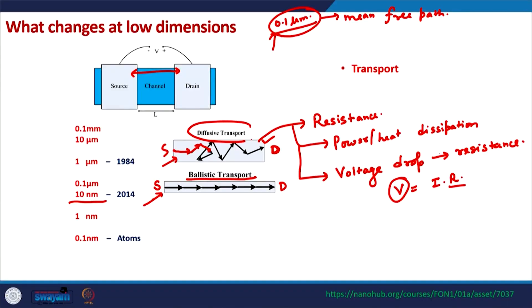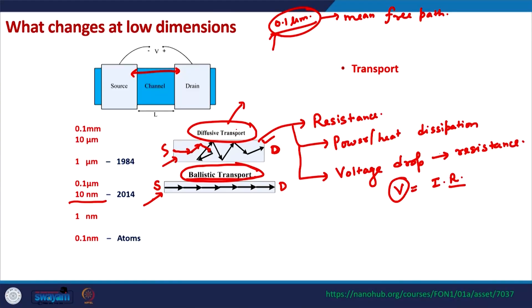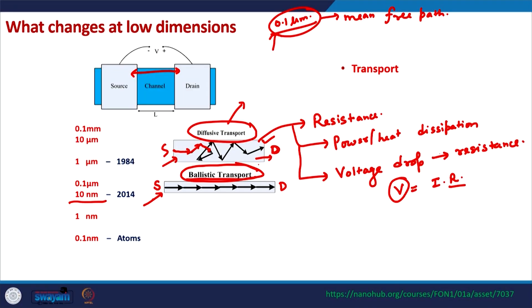Transport where the electron undergoes many collisions in the channel, as in bulk devices, is known as diffusive transport. But in many modern-day devices the transport is no longer diffusive. It is either ballistic transport if the transistor is very small, or on the boundary of ballistic and diffusive, where the electron might undergo some collisions but things are not averaging out as in diffusive transport. The transport is changing fundamentally as device size gets smaller.